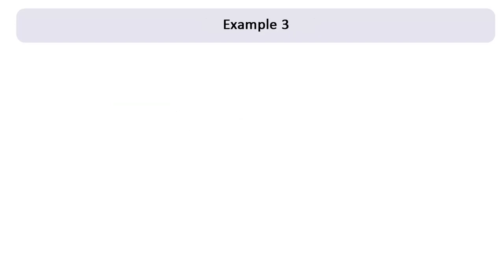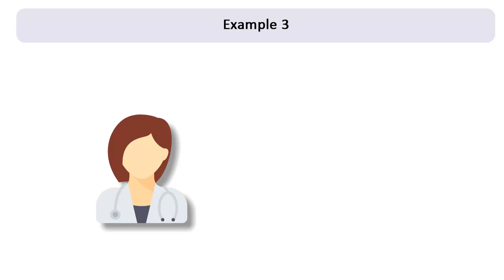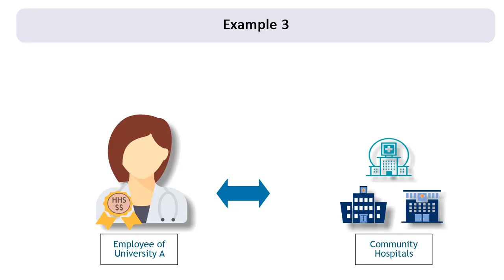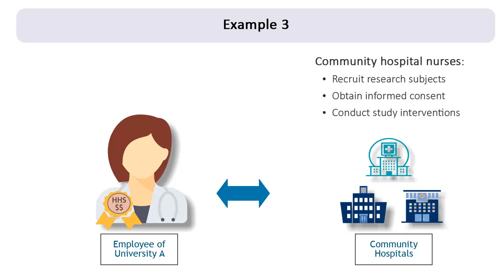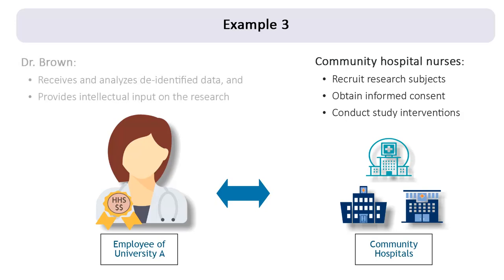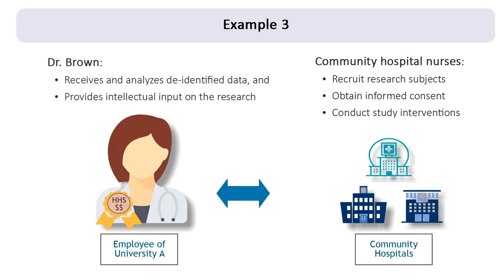Consider one last example. Dr. Brown, an employee of University A, is awarded an HHS grant to conduct a multi-center clinical trial. Nurses employed at 10 partnering community hospitals will do the recruitment, the informed consent process, and the interventions. For the purpose of the research, these nurses are considered to be investigators. Dr. Brown will analyze aggregate de-identified data at University A and provide logistical and intellectual support to the partnering institutions.